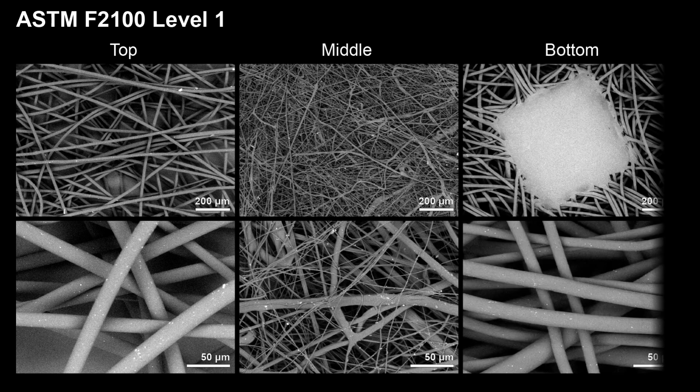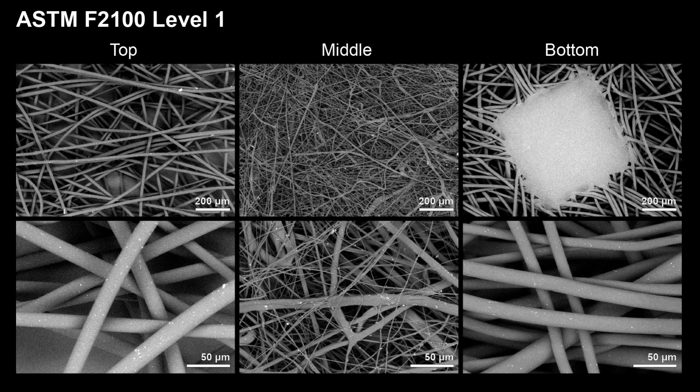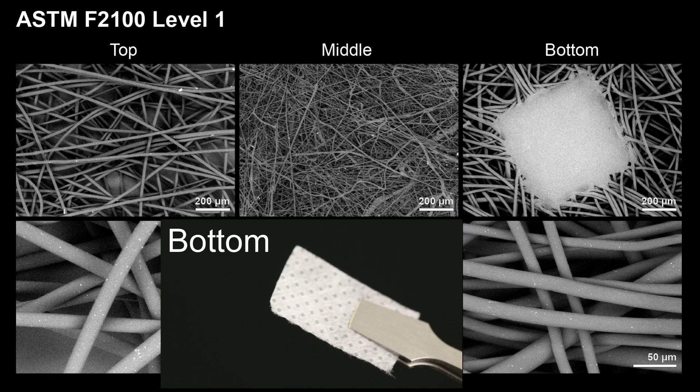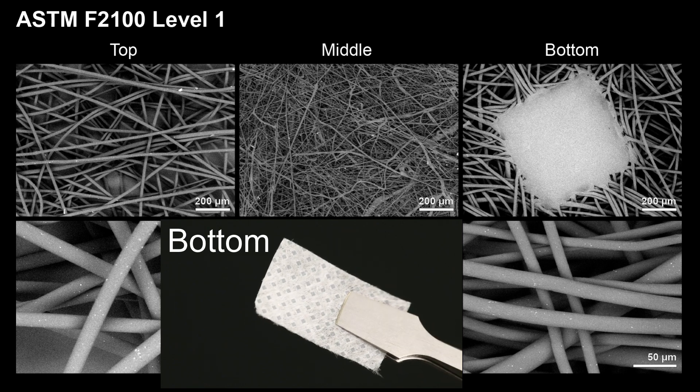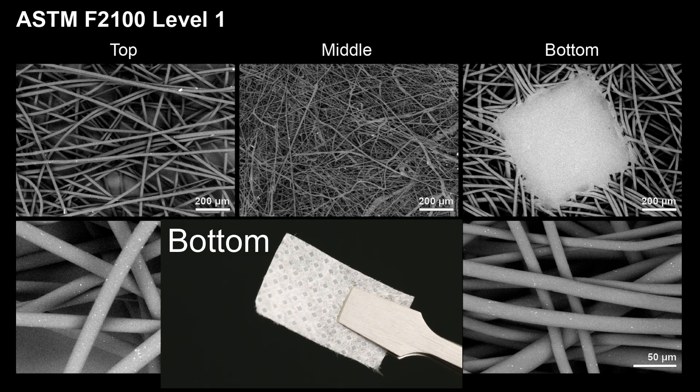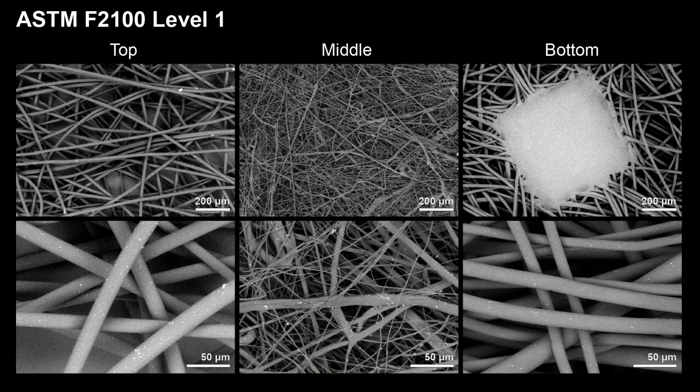Finally, in the low magnification image of the bottom layer, you can see a big square in the middle — that is actually part of the pattern on the mask that you can see with your eyes. Overall, the structure and fiber diameter of this non-woven layer is quite similar to the top layer. The main purpose of this layer is to provide comfort to the user as it is in direct contact with the user's face.